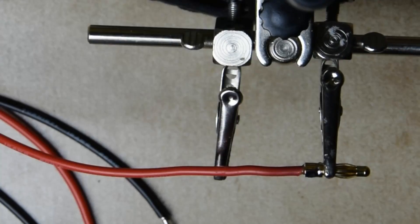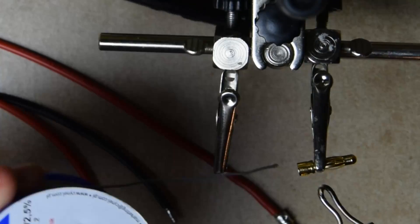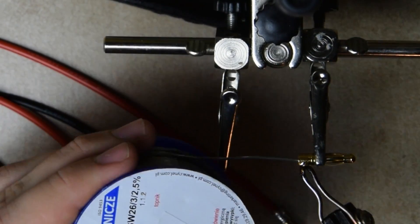With the ends tinned we add some solder to the inside of the bullet connectors and connect one end of each wire. Excess solder can be normally removed with solder wick.